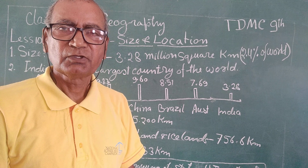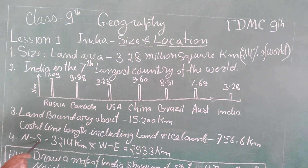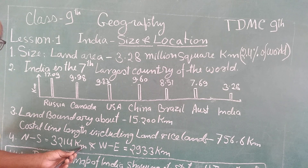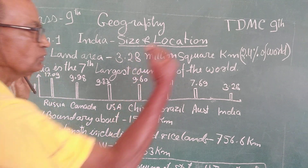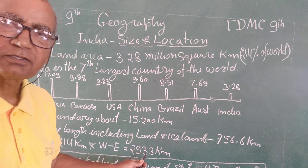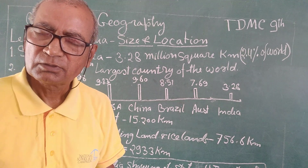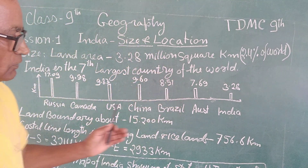If you draw a straight line from north to south — from Jammu and Kashmir to Kanyakumari — this length from north to south is 3,214 km, and from west to east the length is 2,933 km. This is the size of our country.